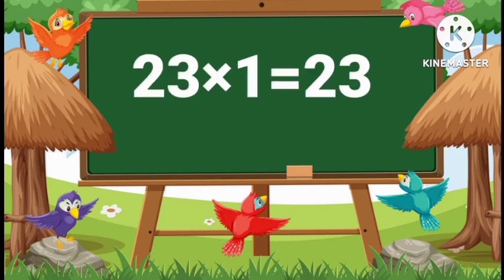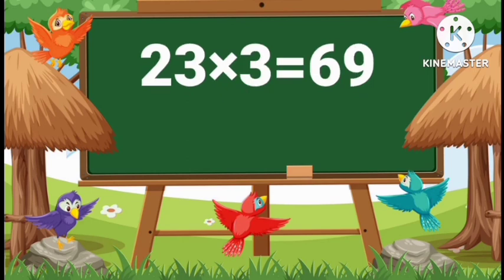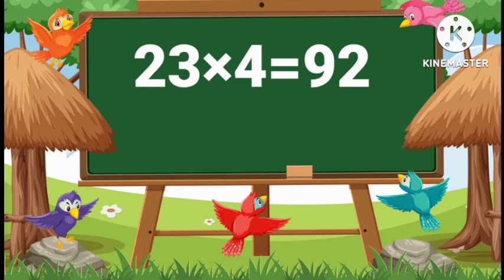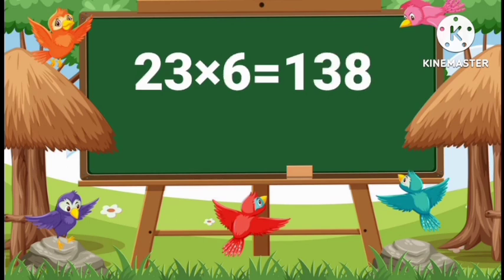23 ones are 23. 23 twos are 46. 23 threes are 69. 23 fours are 92. 23 fives are 115.